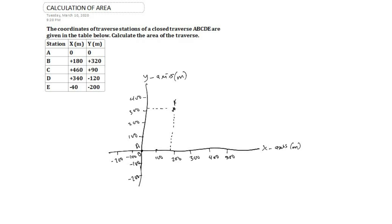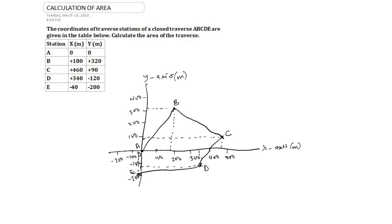Point C is at (460, 90), so 90 is somewhere here. Point C is at (340, minus 120), so minus 120 is here. Point D is at (minus 40, 200). So the traverse is formed by connecting points A to B, B to C, C to D, D to E, and E back to A, as stated in the question. This defines our traverse area, which we are asked to find.